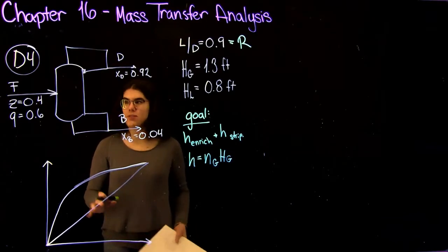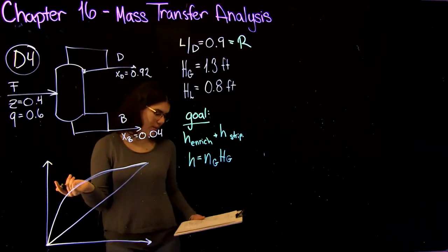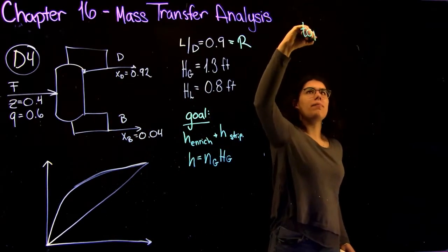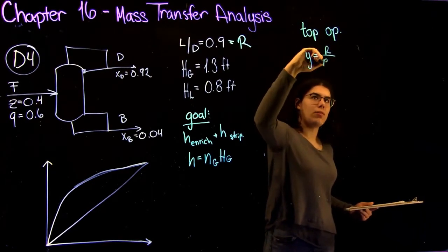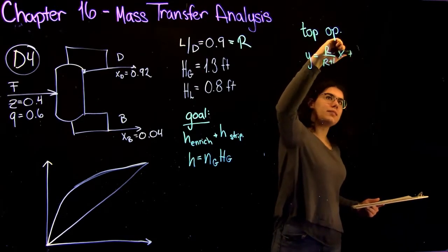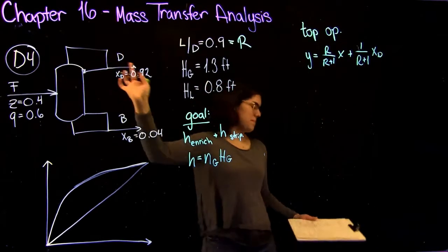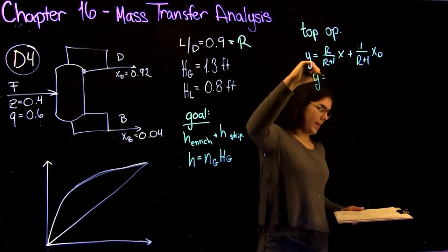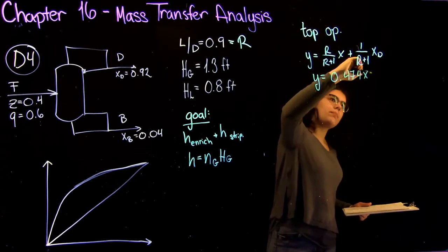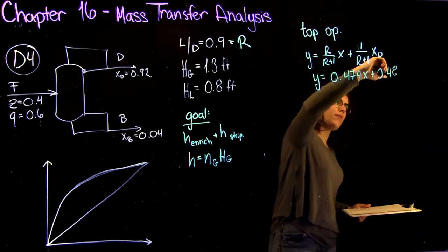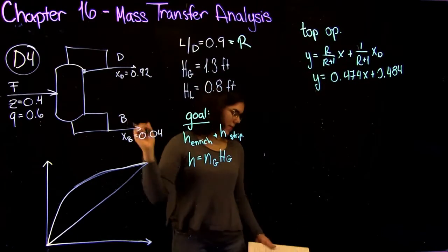The first thing we're going to do is plot our operating lines for the top and the bottom of the column like any distillation column. Our top operating line, we know from a mass balance, the equation is Y equals R over R plus one times X plus one over R plus one times XD. By now you should be really good at deriving this. So our equation for our top operating line is Y equals 0.474X plus 0.484. This just comes from plugging in this R value that we were given as well as the XD value.